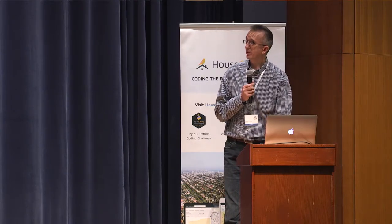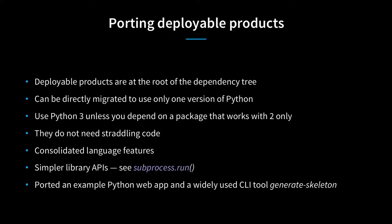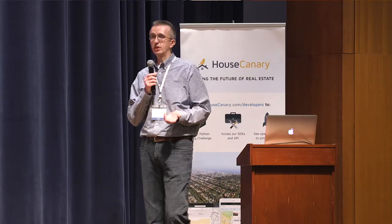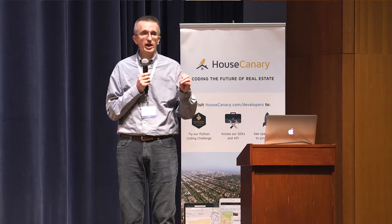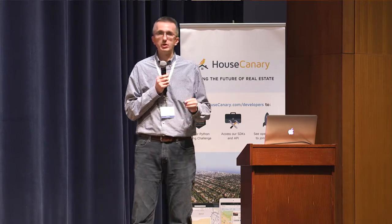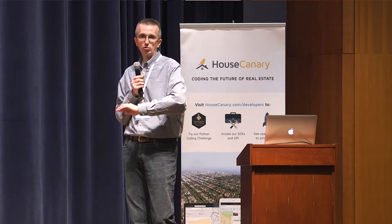Before we go into code examples, one more note about deployable products: you don't need to provide multi-version code—just go straight to Python 3. subprocess in Python 3.5 replaced check, check_output, and call with `subprocess.run`, and you can just use that everywhere. Unless you're depending on a package not yet ported to Python 3—which is nowadays rare—just use straight Python 3. Otherwise use straight Python 2.7 for now on a deployable.